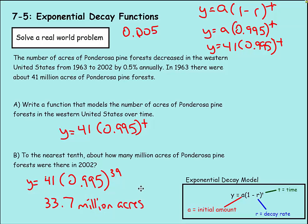Because the forest was losing 0.5% annually, that eventually dropped it down almost 7.5 million acres from its original 41 million acres.